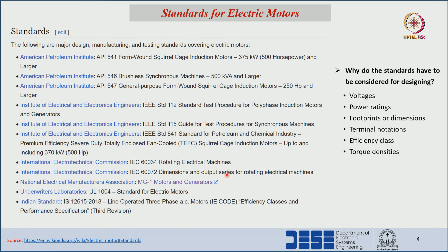Why must we follow standards? With respect to available voltage ratings — 230 volts single-phase, 440 volts three-phase, 11 kV or 33 kV depending on the utility grid side — standards define what voltage ratings, power ratings, footprints or dimensions, terminal notations, efficiency class, and torque densities are permissible. Standards provide a generalized, common approach for all manufacturers so that maintenance and analysis will be easy for all types of machines.